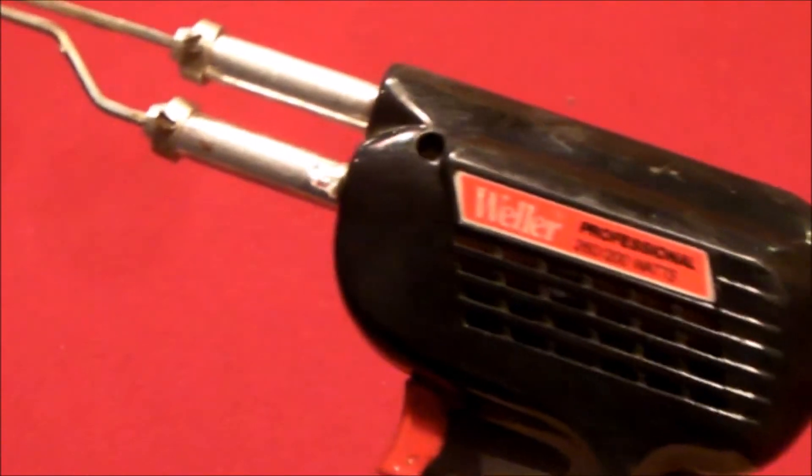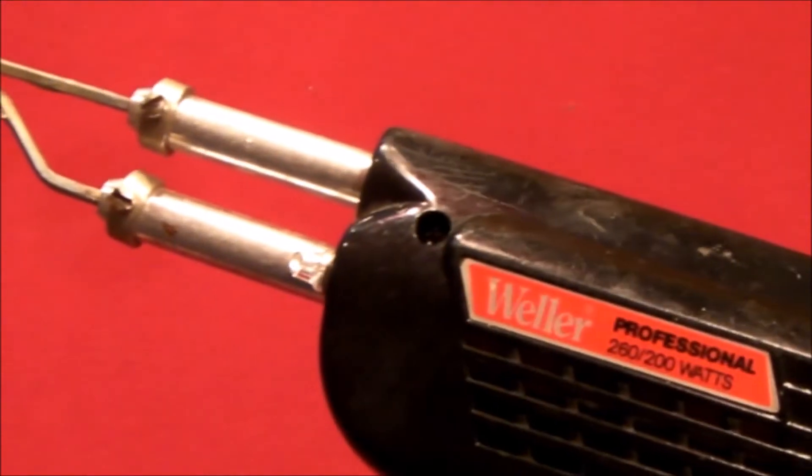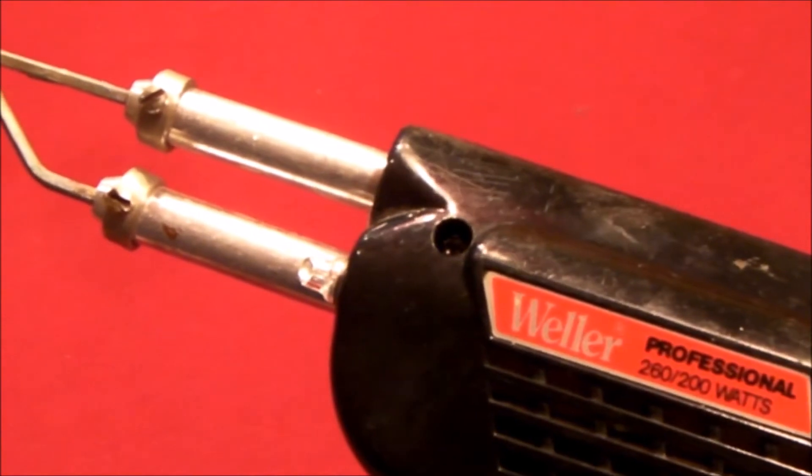Hello everybody. A lot of you out there have soldering guns similar to this one which have a high and a low setting, but a lot of people don't seem to understand how the high and low setting works.